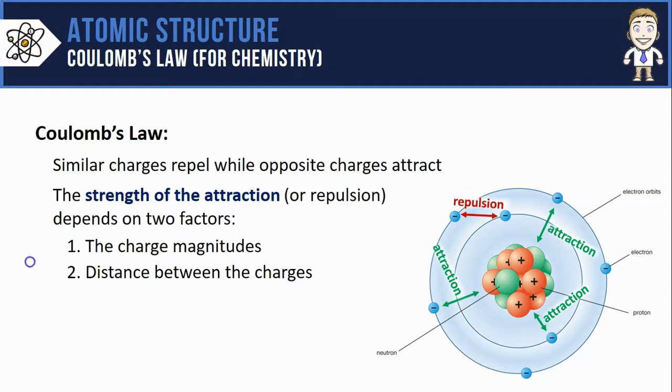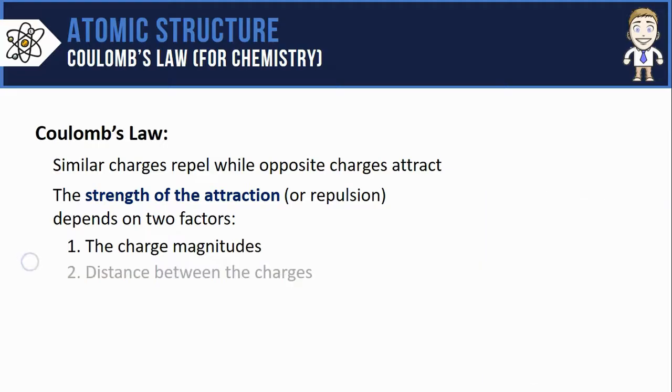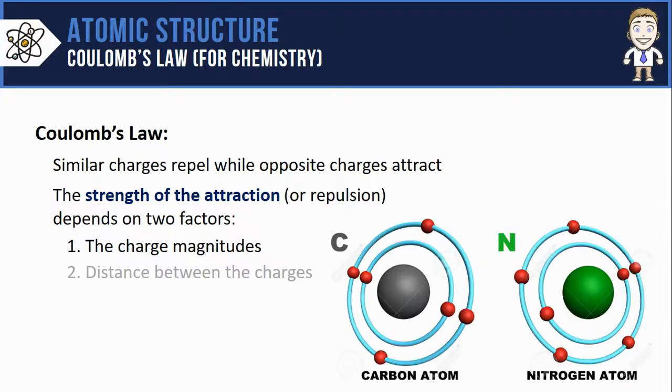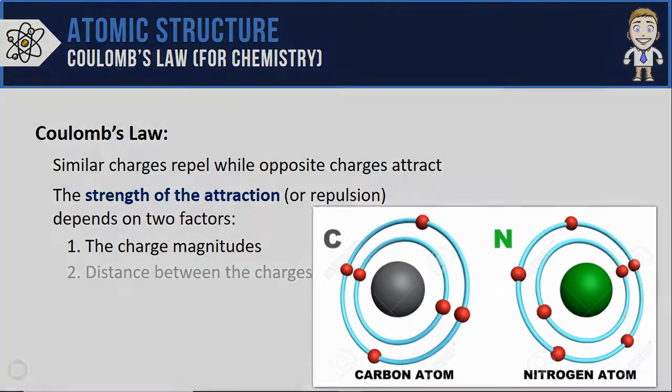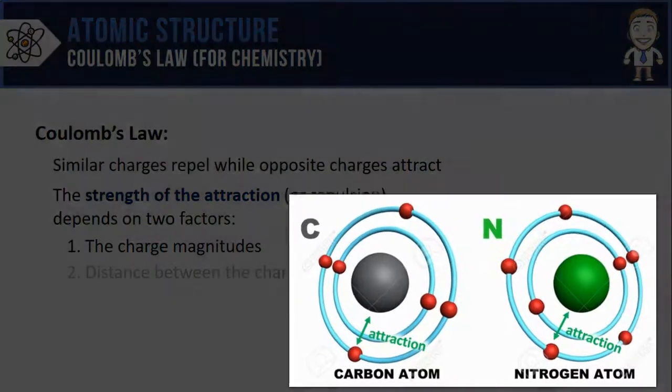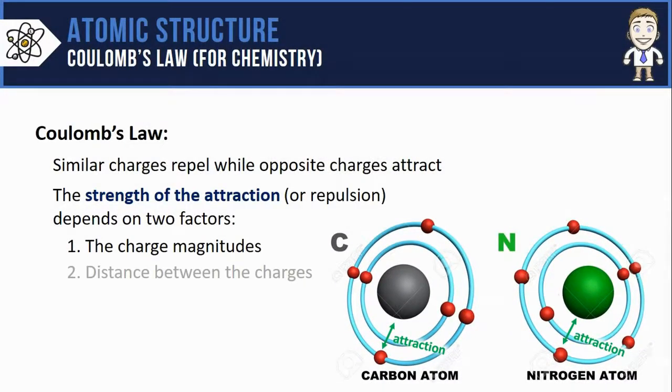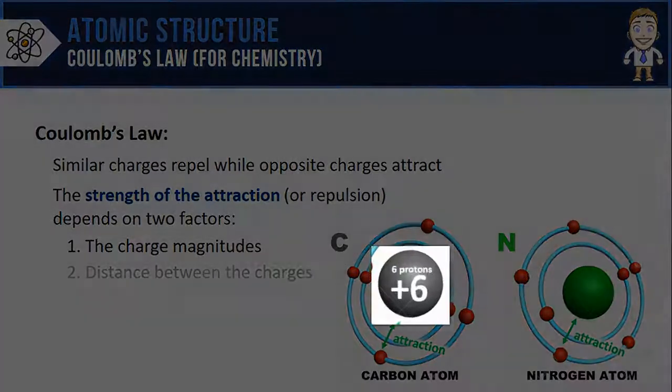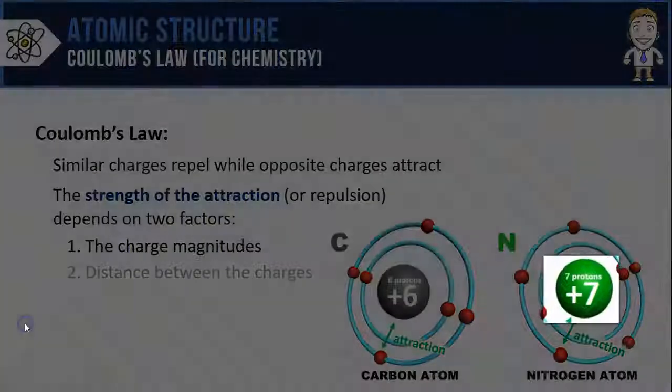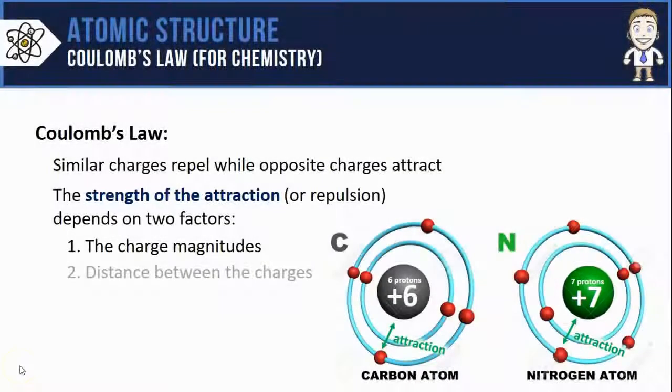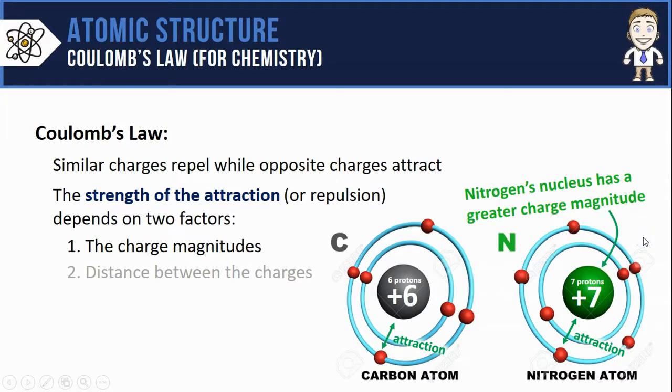Let's focus just on the charge magnitude part of this and see how it works by comparing a carbon atom to a nitrogen atom. In both atoms there's an attraction between the electrons and the positive nucleus. In carbon however the nuclear charge is plus 6 whereas in nitrogen it's a plus 7. So we can see that nitrogen's nucleus is more positive. The Coulomb's Law way to describe that is by saying nitrogen's nucleus has a greater charge magnitude.